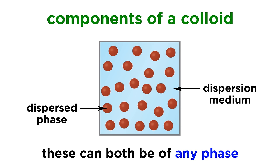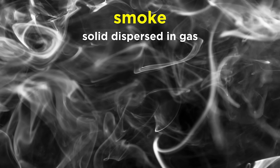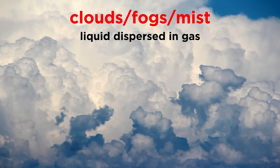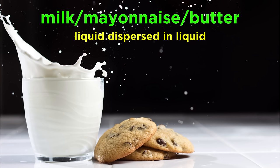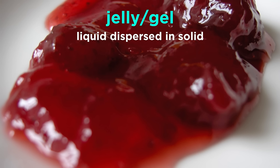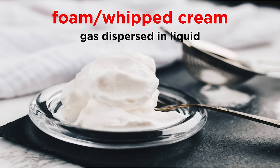The dispersed phase and the dispersion medium can each be of any phase. Smoke is solid dispersed in gas. Clouds, fogs, and mist involve liquid dispersed in gas. Milk, mayonnaise, and butter involve liquid dispersed in liquid. Jellies and gels are liquids dispersed in solids. Foams and whipped cream involve gas dispersed in liquid. So we can see that there are quite a wide variety of colloids.